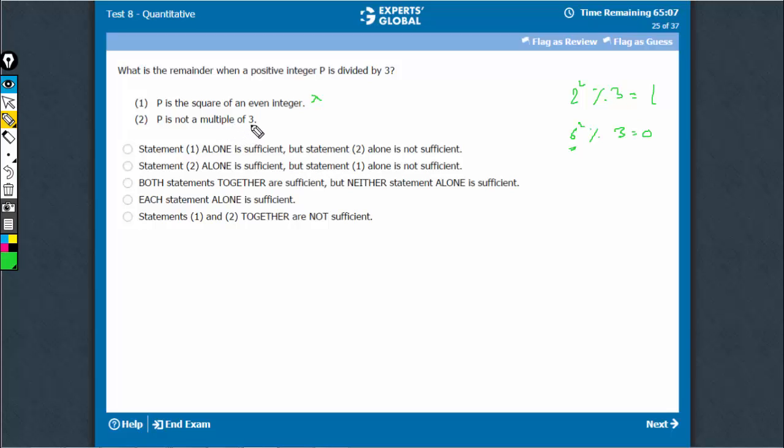Statement 2 says p is not a multiple of 3. It is not a multiple of 3, but it can be something like 4, where the remainder is 1. It can be something like 5, where remainder is 2. Again, multiple answers are possible. So, not sufficient.